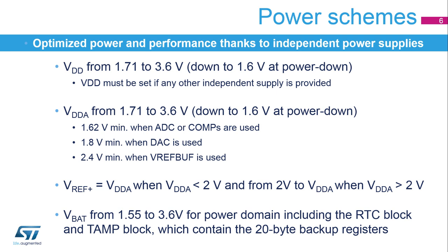Other independent supplies are provided to allow peripherals to operate at a different voltage. The analog power supply VDD-A is always connected to VDD. When the analog-to-digital converters or comparators are used, the VDD-A voltage must be greater than 1.62 volts. When the digital-to-analog converters are used, VDD-A must be greater than 1.8 volts. When the voltage reference buffer is used, VDD-A must be greater than 2.4 volts.